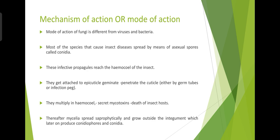The infective propagules get attached to the epicuticle then penetrate into the cuticle either by germ tubes or infection pegs. They then get multiplied in the haemocoel of the insect, followed by secretion of mycotoxins which results in the death of the insect host. After that the mycelia spread saprophytically and grow outside the integument, later producing conidiophores and conidia.